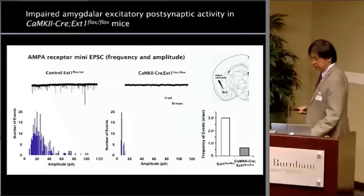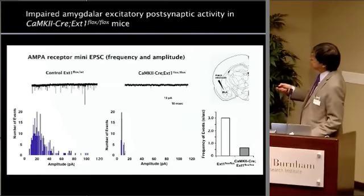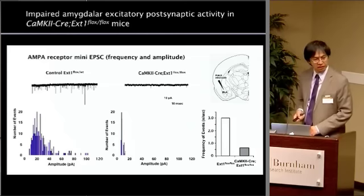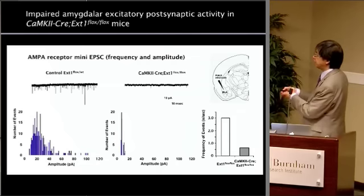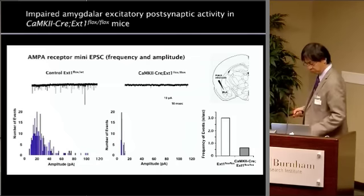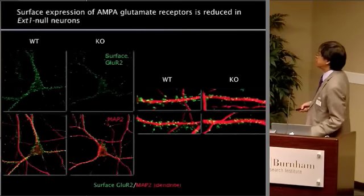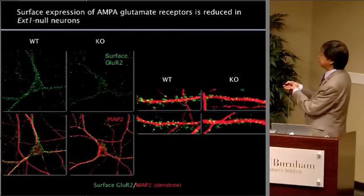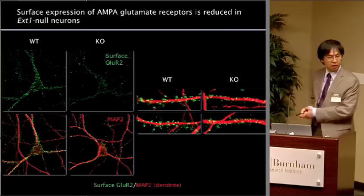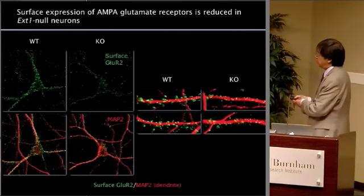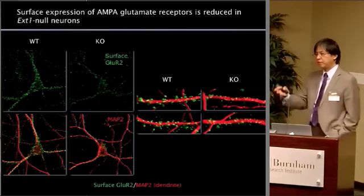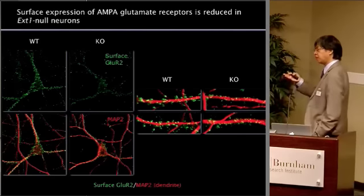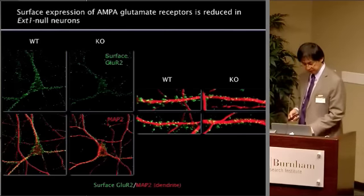We did some electrophysiology, and this seems to be due to insufficient function of the AMPA receptor. You see the spikes reduced in the knockout mice amygdala. The surface expression of AMPA receptor is reduced in the knockout neurons. So we hypothesize that this is the molecular basis for the cognitive and behavioral deficits in the knockout mice.